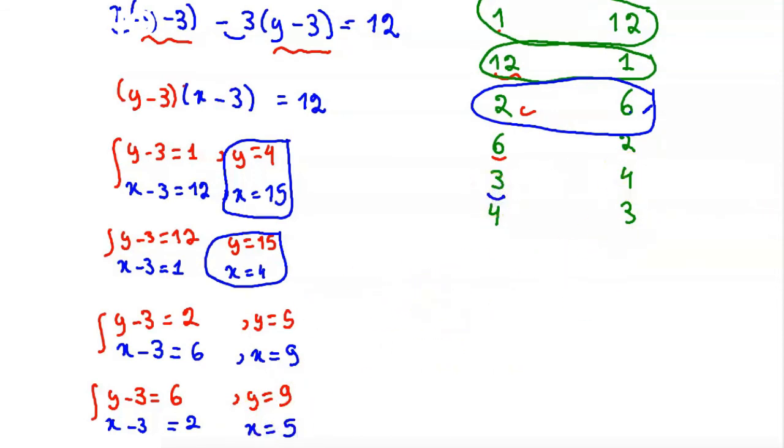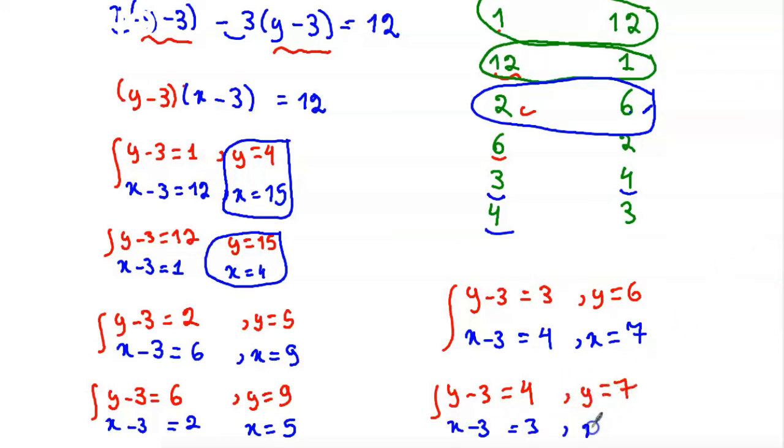Fifth case, y minus 3 equal to 3 and x minus 3 equal to 4, so y equal to 6 and x equal to 7. And the last case, y minus 3 equal to 4 and x minus 3 equal to 3. In this case, y equal to 7 and x equal to 6.